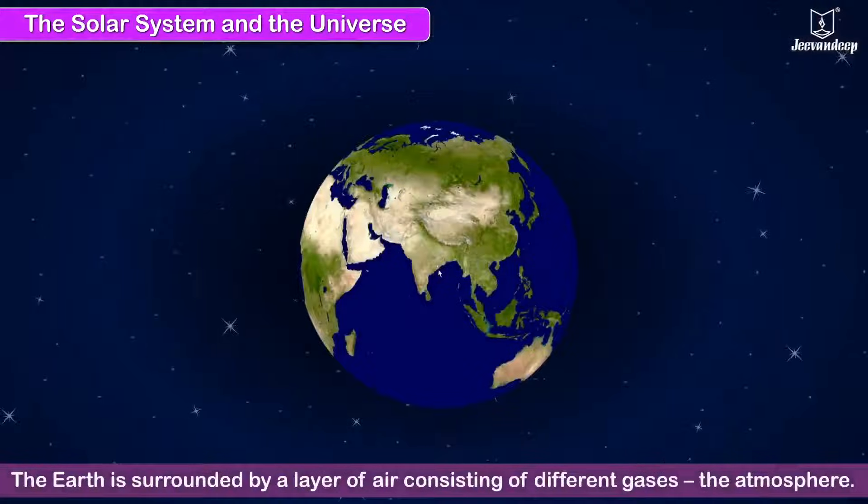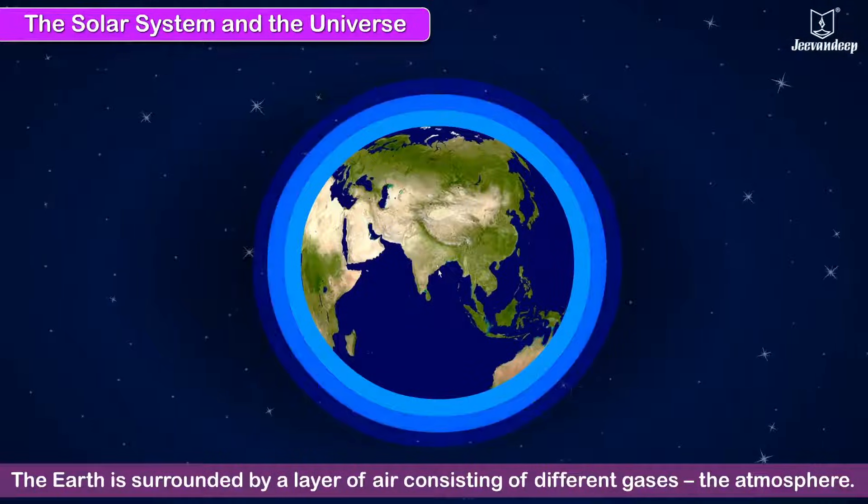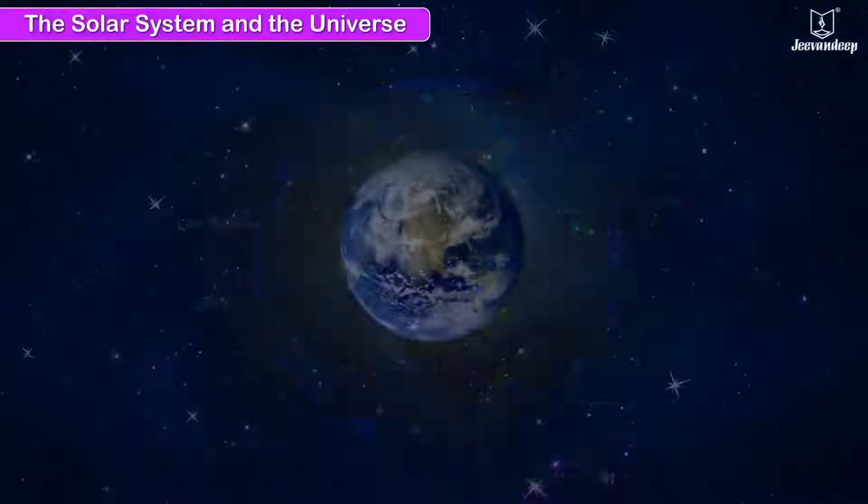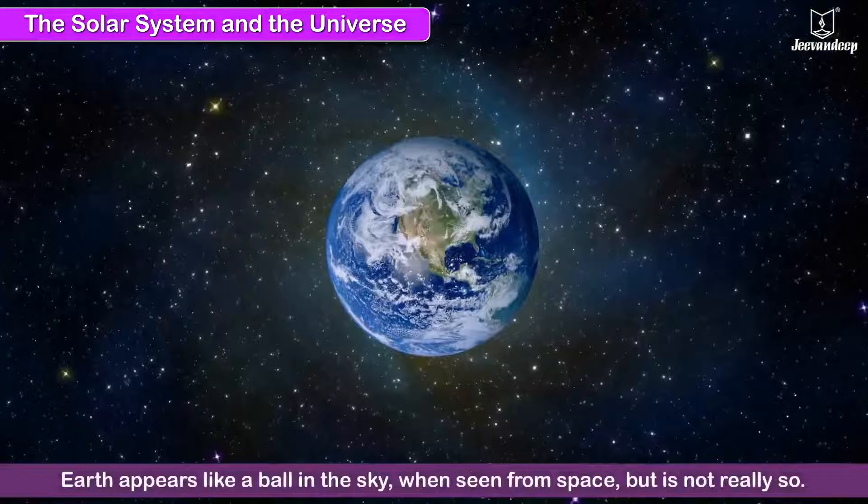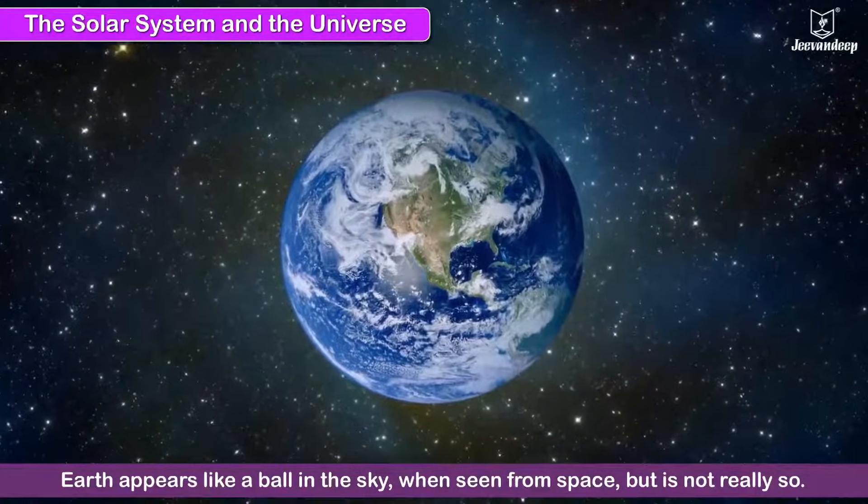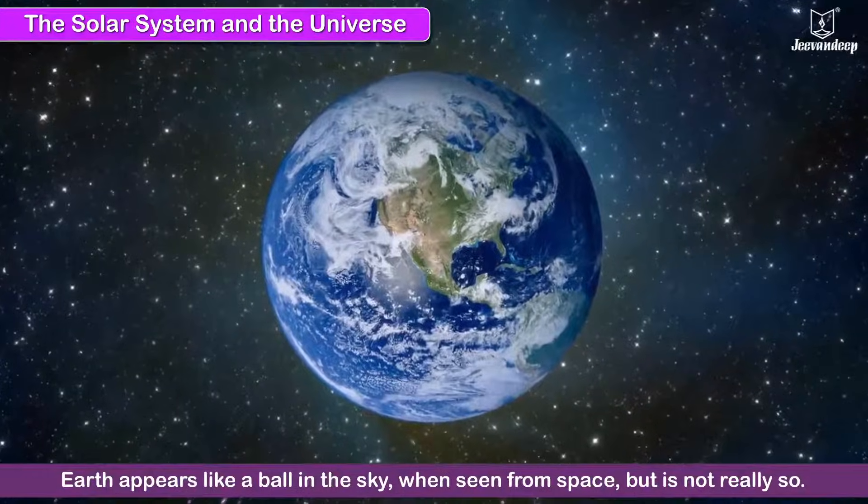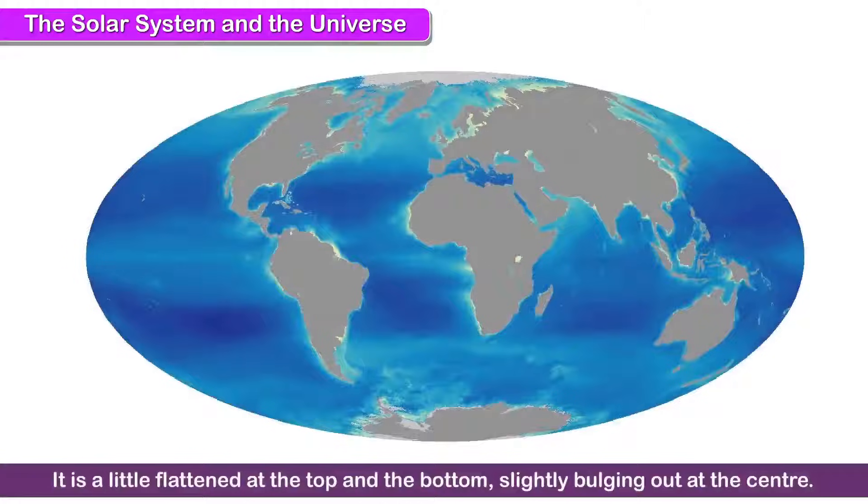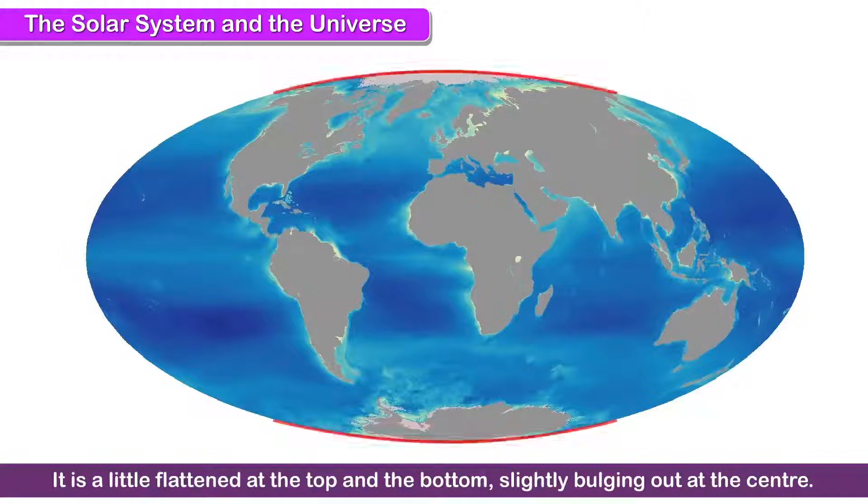The Earth is surrounded by a layer of air consisting of different gases, the atmosphere. Earth appears like a ball in the sky when seen from space, but it is not really so. It is a little flattened at the top and the bottom, slightly bulging out at the center.